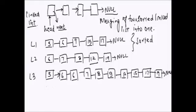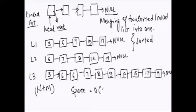The time complexity should be O(n + m), where n and m are the number of nodes in L1 and L2 respectively, but the space complexity should be O(1) — it should not be in terms of n and m.